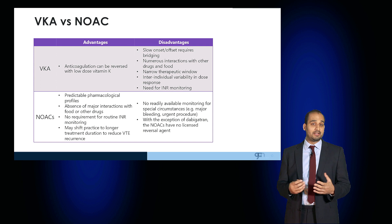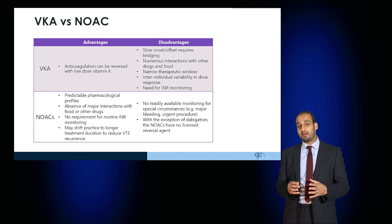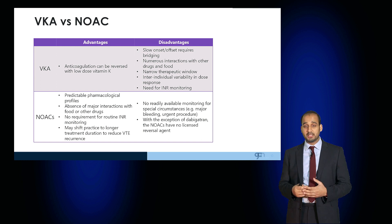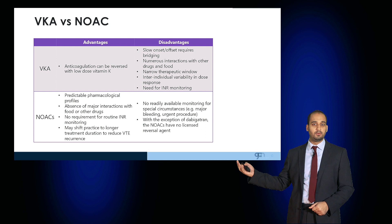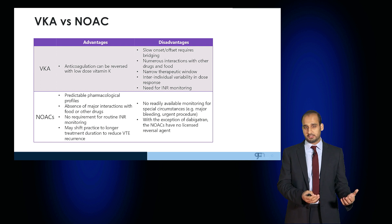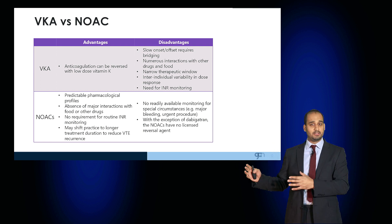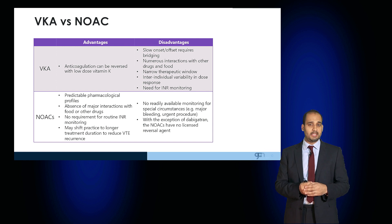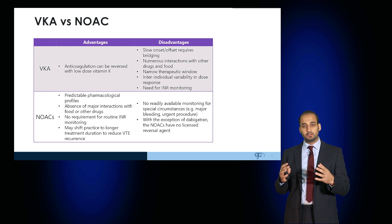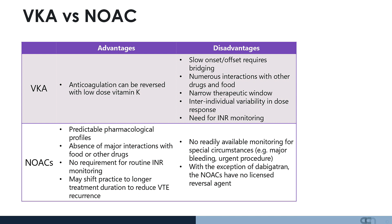Warfarin has advantages: it is an anticoagulant that can be reversed by vitamin K. However, there are a number of disadvantages. It has a slow onset and offset, it requires bridging, there are numerous interactions with other drugs and foods, and a narrow therapeutic index — meaning if the INR is too low the patient is not anticoagulated adequately, and if the INR is too high they are at risk of severe complications including haemorrhage. There is marked inter-individual variability in dose response due to genetic polymorphisms, and patients require regular INR monitoring which can be inconvenient and costly.